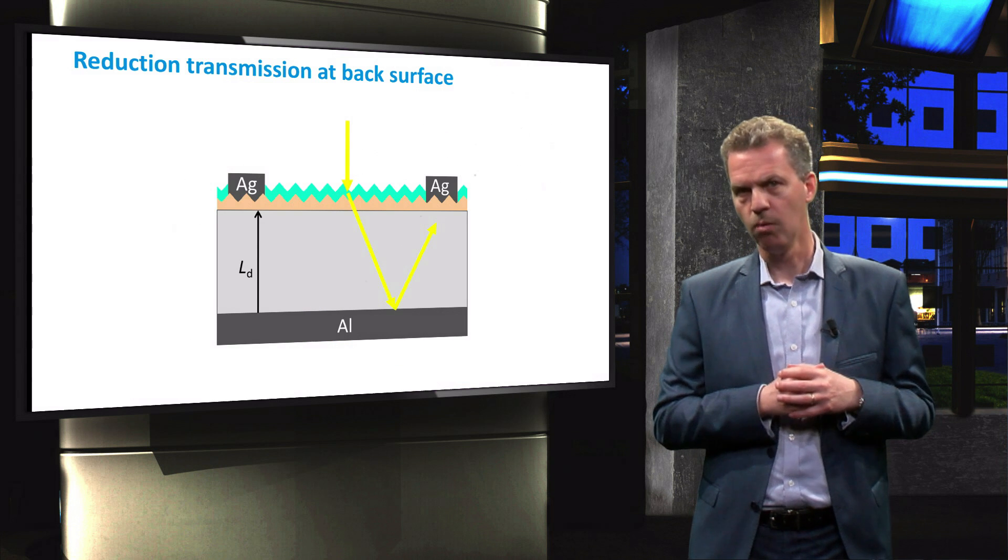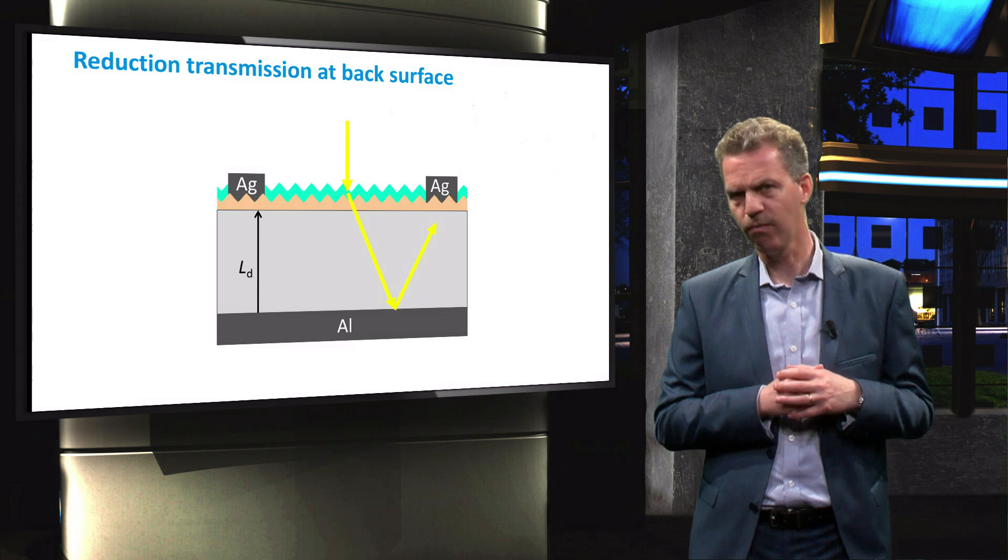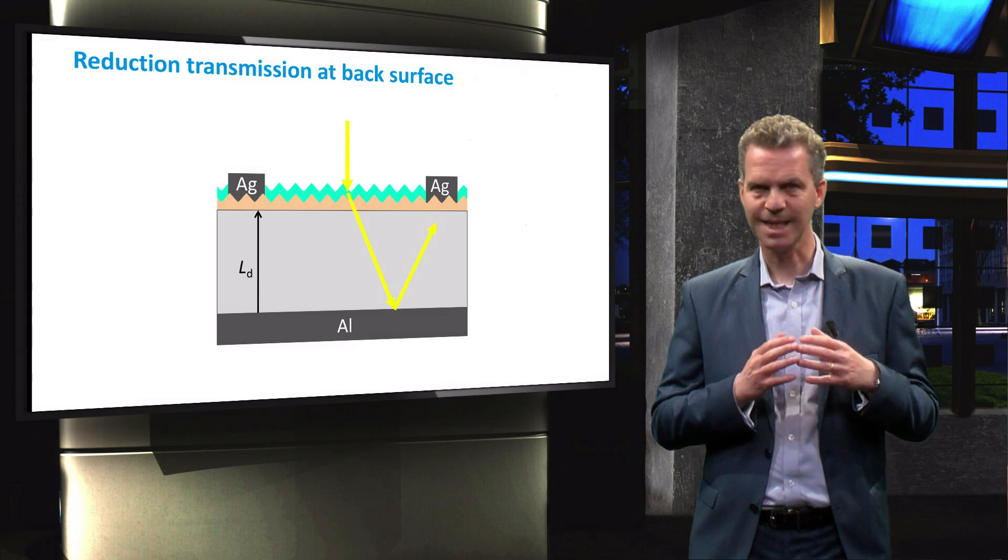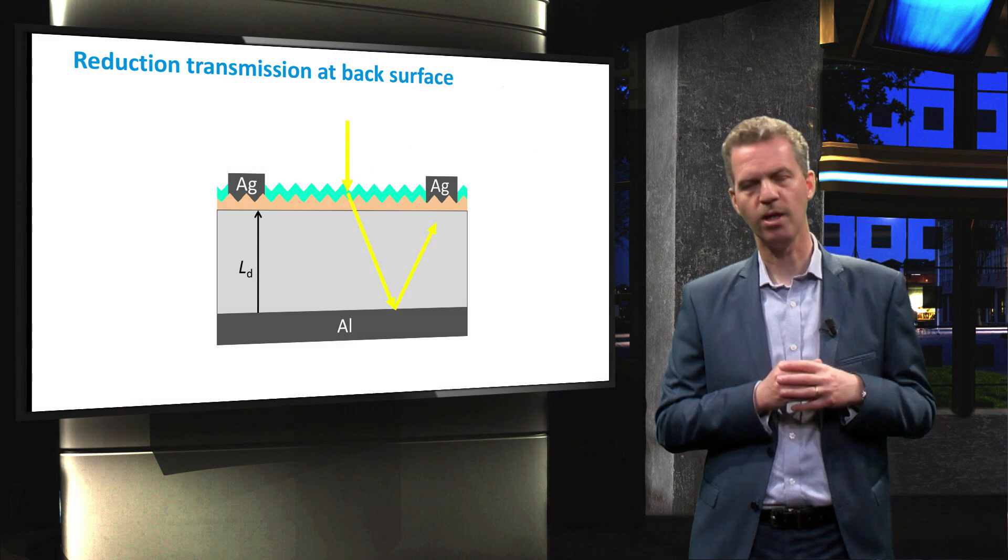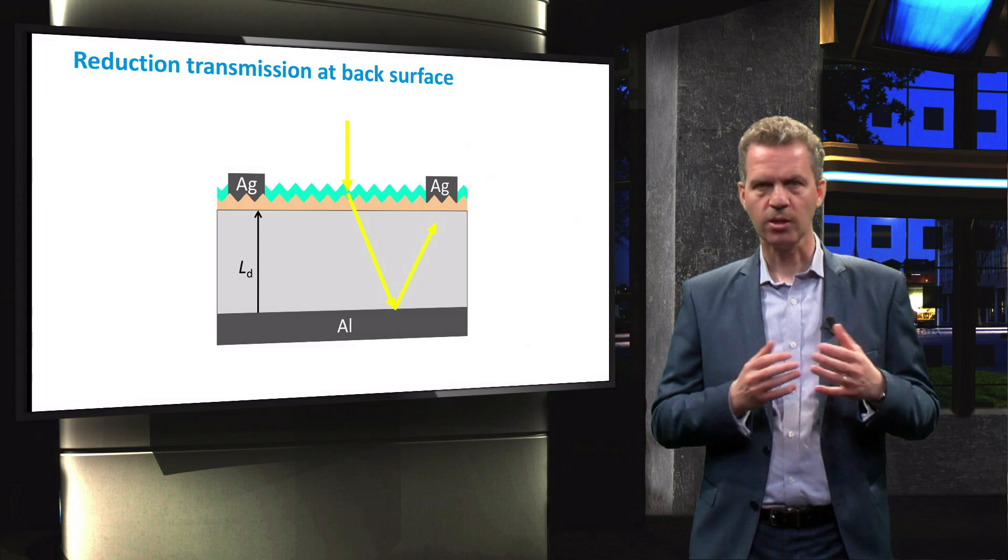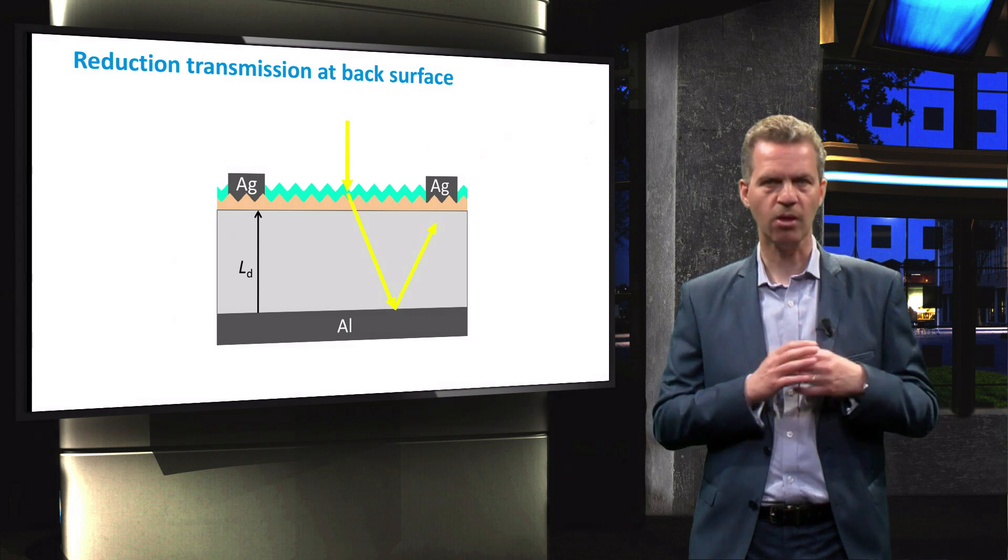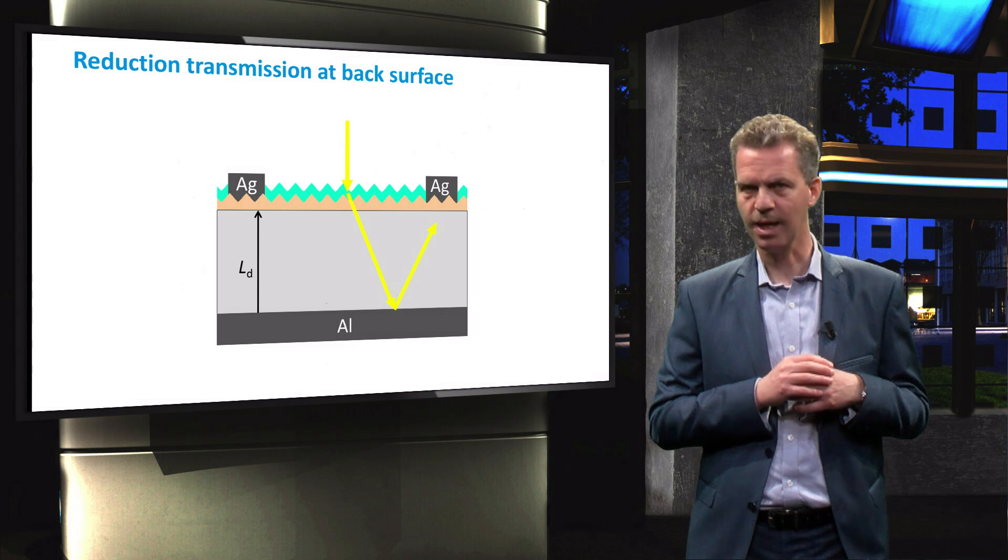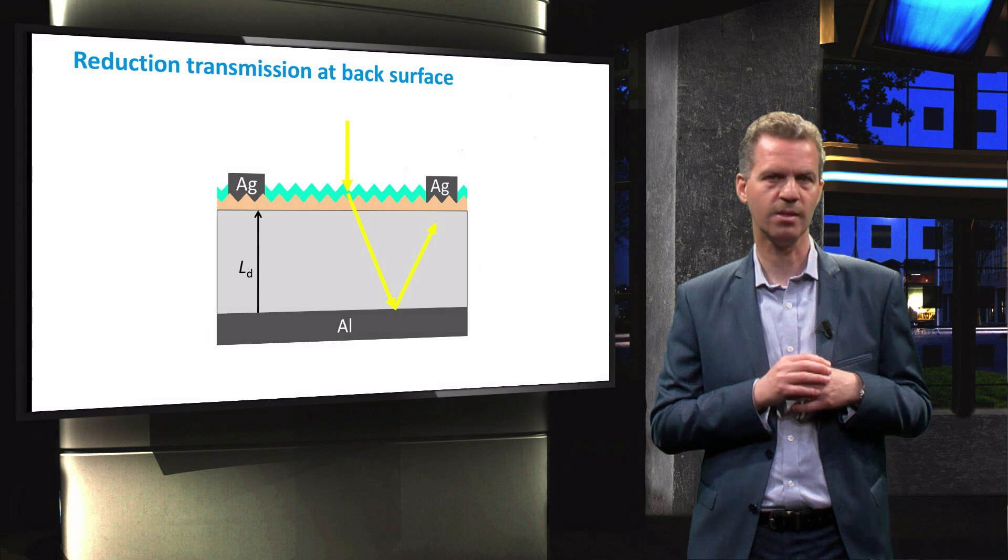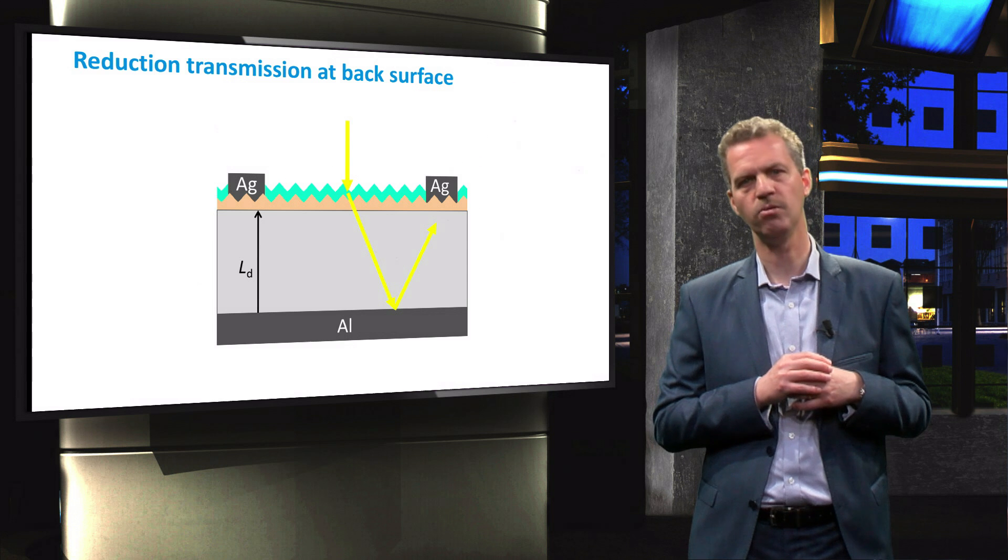Combined with surface texturing, we can increase the path length even further, since light will be scattered and coupled into the device at an angle. Texturing the wafers is therefore also a useful tool to limit the thickness of the wafer while maintaining the short circuit current density and increasing the VOC.